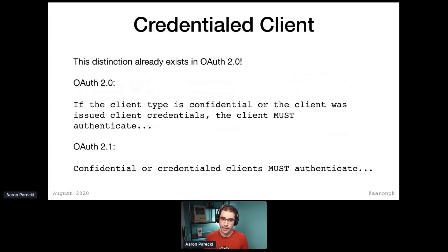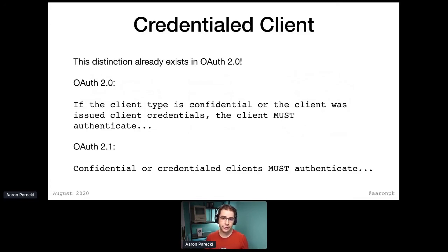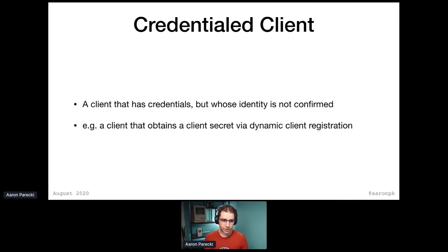The app is downloaded with no secret. The app wakes up the first time, and the first thing it does is use dynamic client registration to register itself at the OAuth server. Then it gets a client secret. That secret lives only within that one instance of the app. So for some parts of the spec, it can act like a client secret. But what it doesn't do is confirm the identity of the app, because the act of getting that secret didn't require authentication — so there's no provable identity of the application. A credentialed client is a client that has credentials but whose identity is not confirmed. Probably the most common example will be a client that obtains a client secret via dynamic client registration.